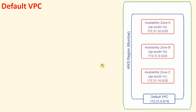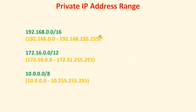But sometimes the private addresses given by the default VPC are not what we are comfortable with. Each admin has their own networking preferences. These are the private addresses we normally use. Some people are more comfortable with the 192.168.0.0/16 range, which contains addresses from 192.168.0.0 to 192.168.255.255.